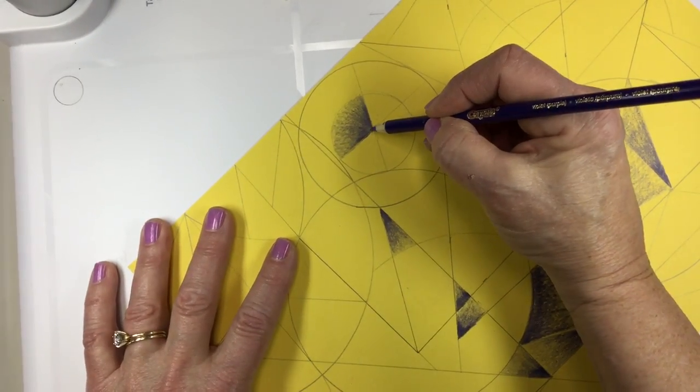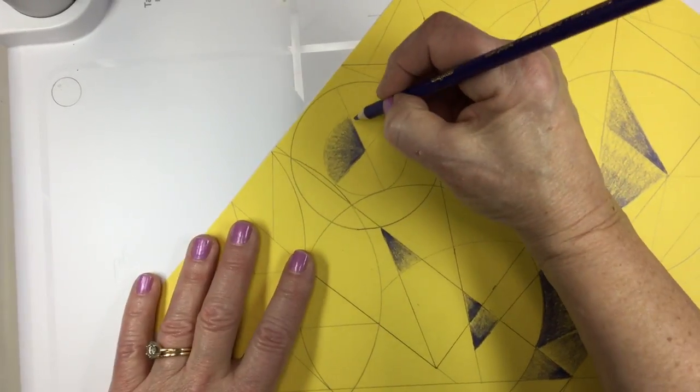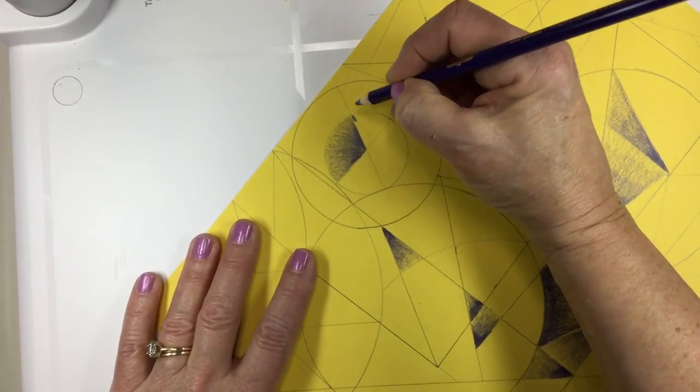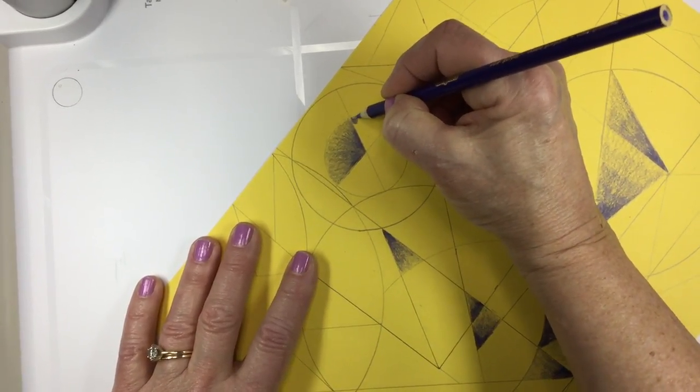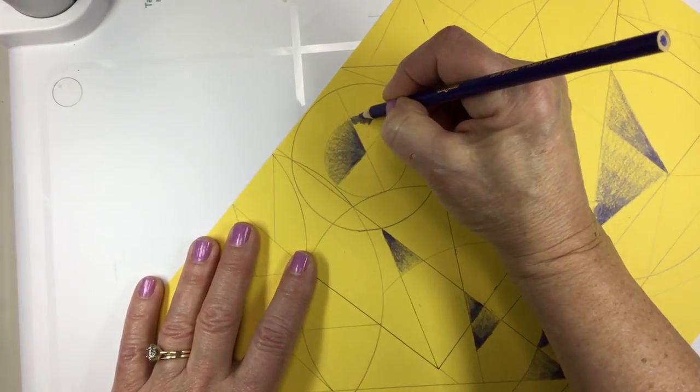And this time, instead of going dark to light, I'm going to go dark to light this direction. So you can begin with an outside edge. It doesn't always have to begin with a point.